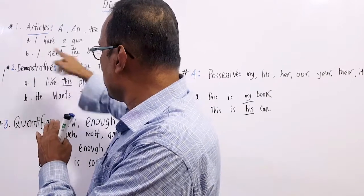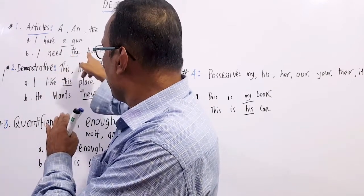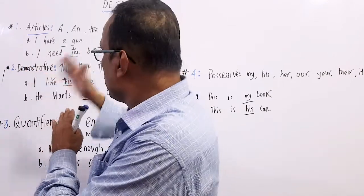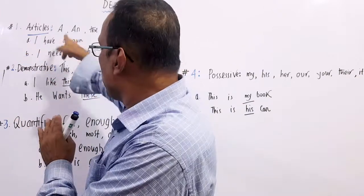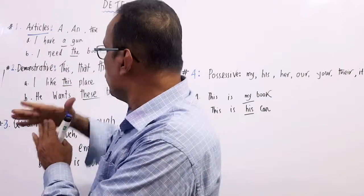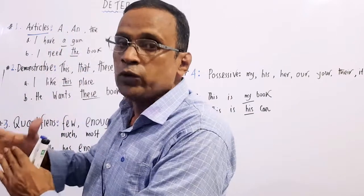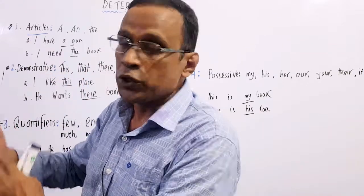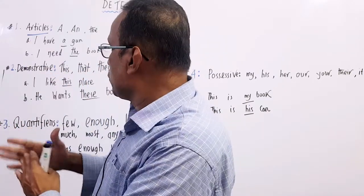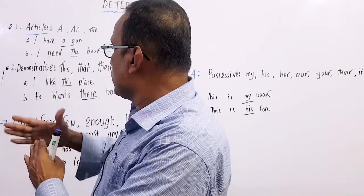And for a and an, we use a or an when we speak about a noun generally, not specifically. Number two: demonstratives.